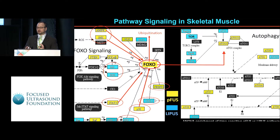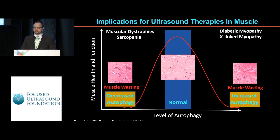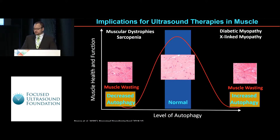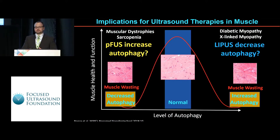So depending on which ultrasound modality you choose, you can drive autophagy in one direction or another. The pathological relevance is that in skeletal muscle, normal muscle function requires an appropriate level of autophagy. If it becomes dysregulated in either direction, the result is necrotic myopathy and muscle loss. Different diseases induce this pathology by altering autophagy in different ways. Our RNA-seq data beg the question: can we use different modalities to appropriately alter autophagy and hopefully prevent muscle loss and weakness?